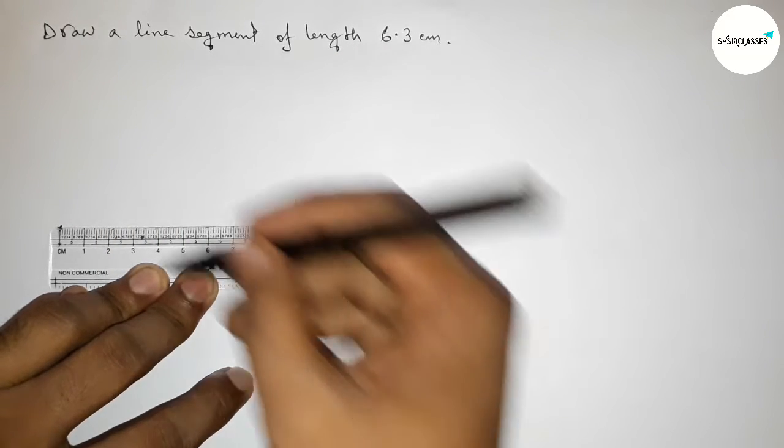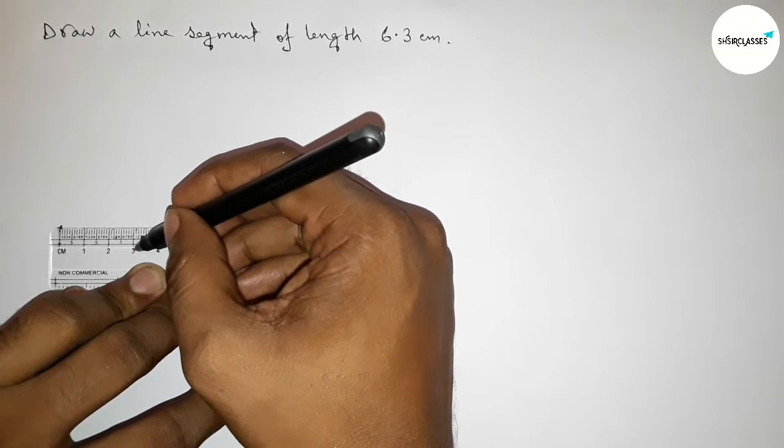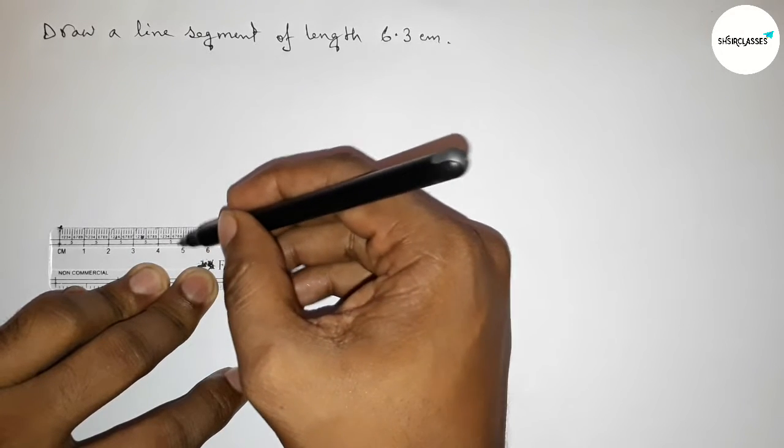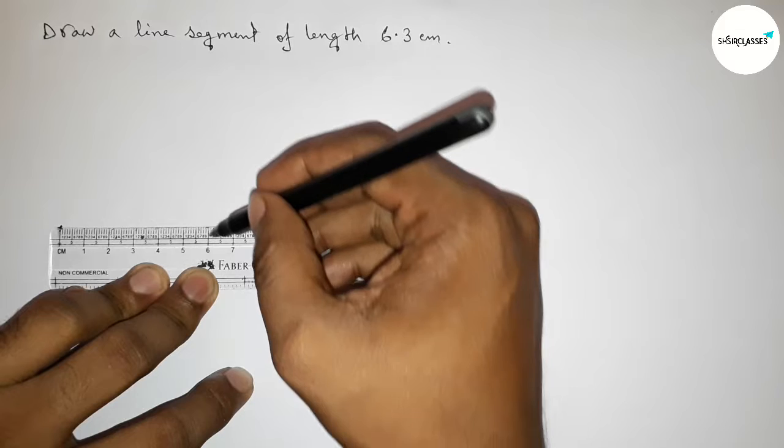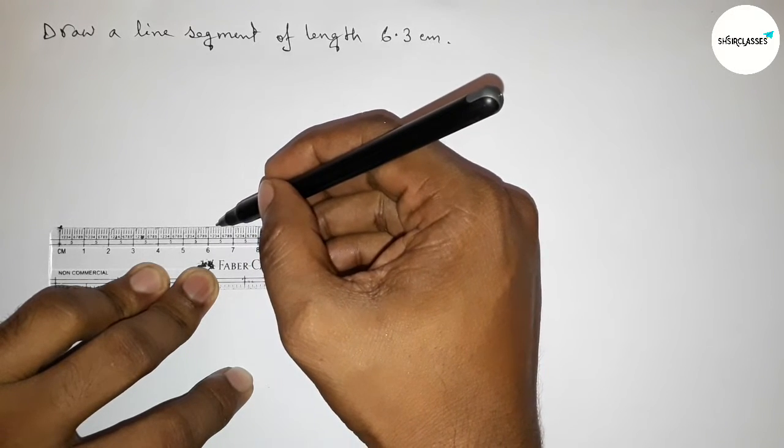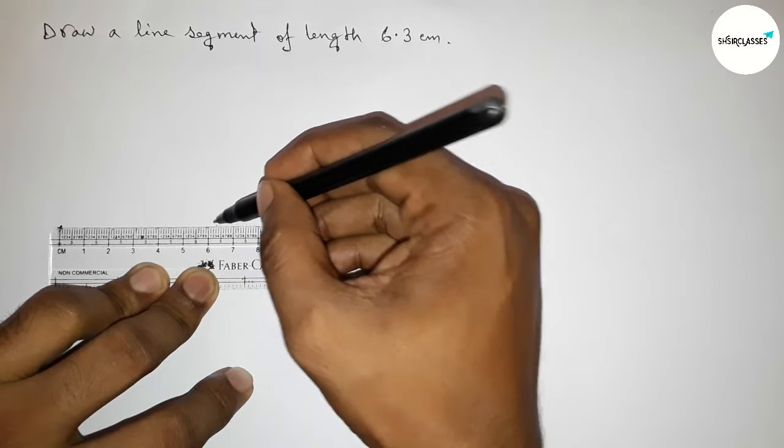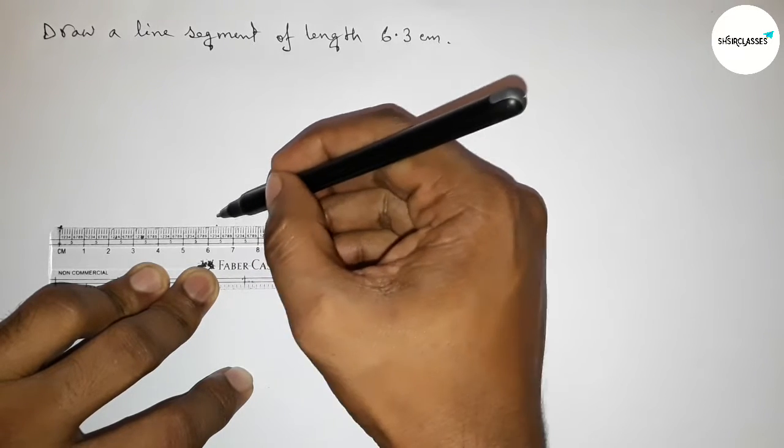Now counting, so this is zero, one centimeter, two centimeters, three centimeters, four centimeters, five centimeters, six centimeters. And this is six point one, two, three, so this is six point three centimeters. First marking six point three centimeters here.